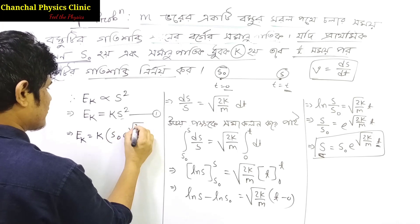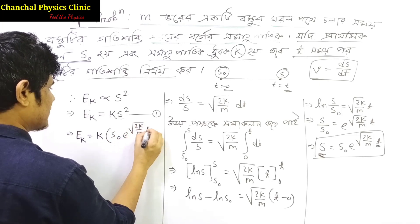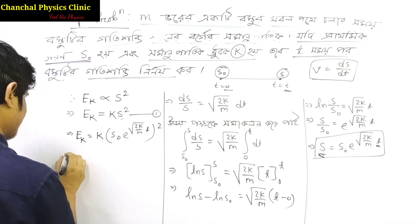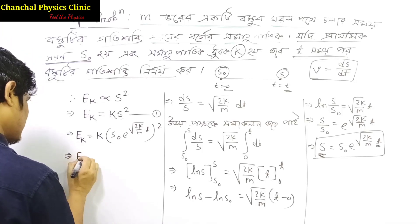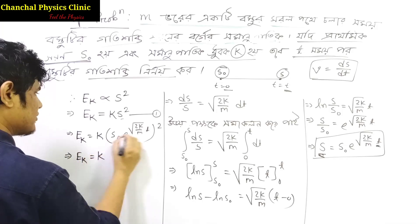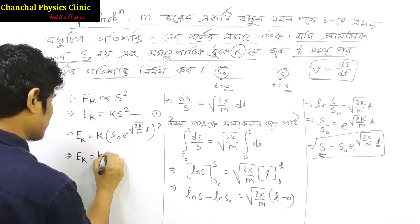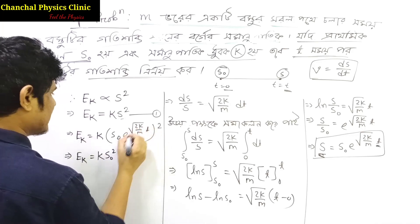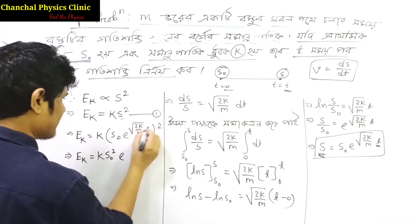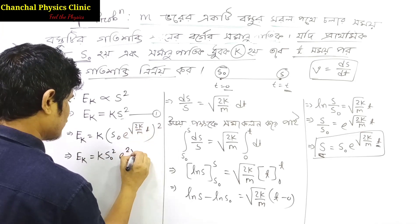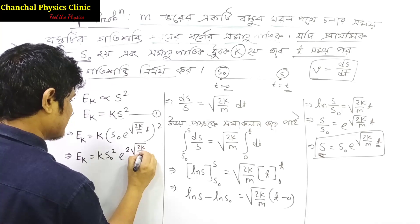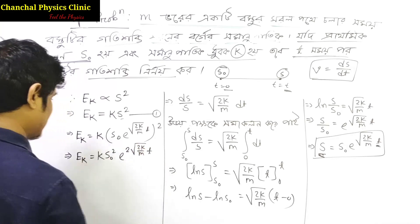So s0 is the initial position, and s equals s0 times e to the power of √(2k/m) · t. Here k is the spring constant, and this gives us the exponential form of the solution.